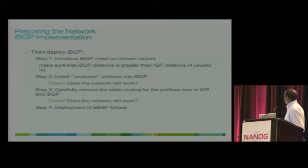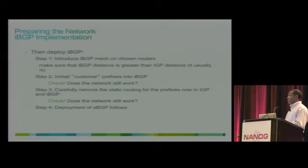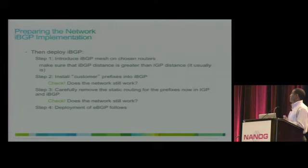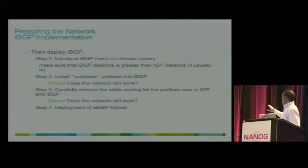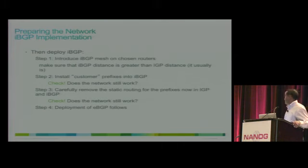Another important thing: make sure IBGP distance is greater than IGP distance. Distance is a preference in terms of routing protocol — when a prefix is received from multiple protocols, the lower distance is preferred. On a Cisco system, for example, IBGP uses a distance of 200, and IGP (OSPF or ISIS) is about 110 or 115 — lower than IBGP.